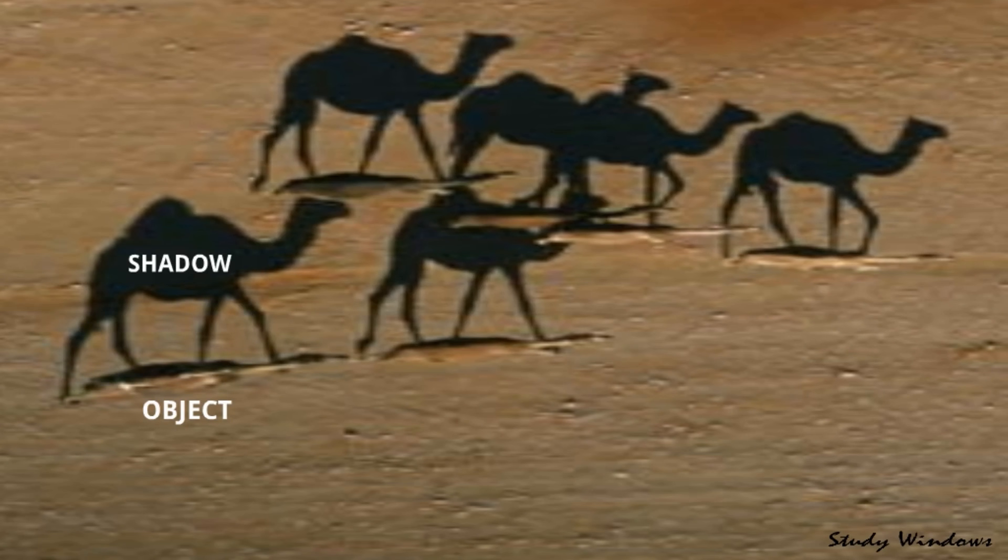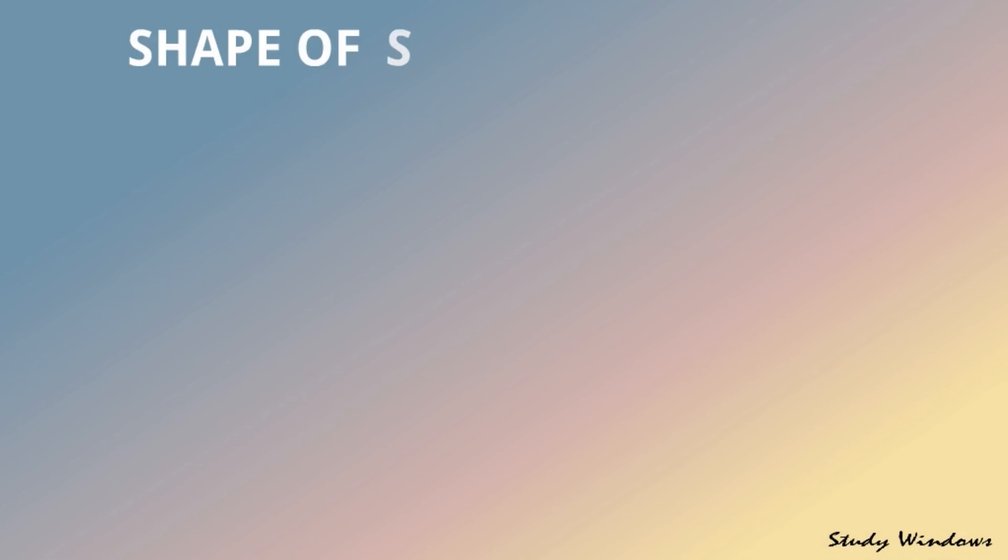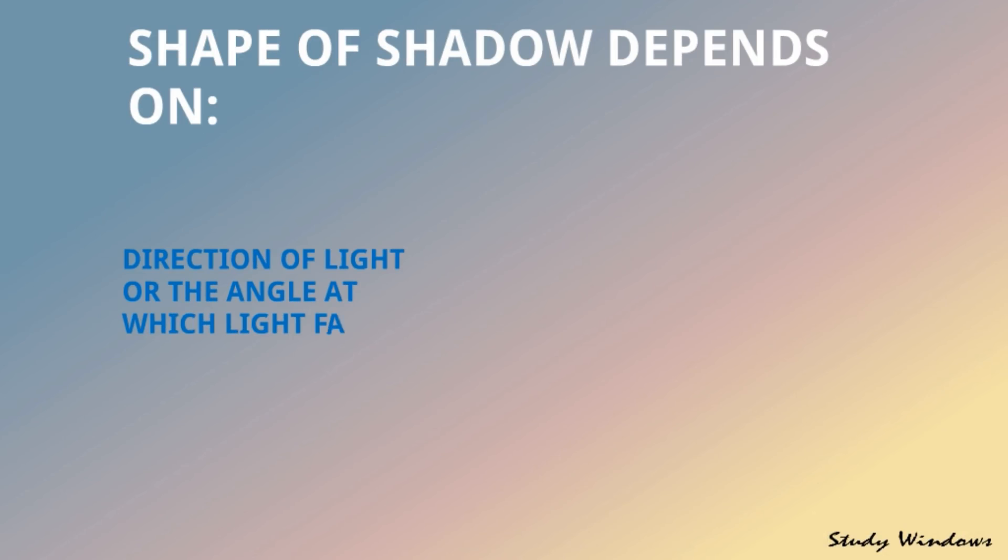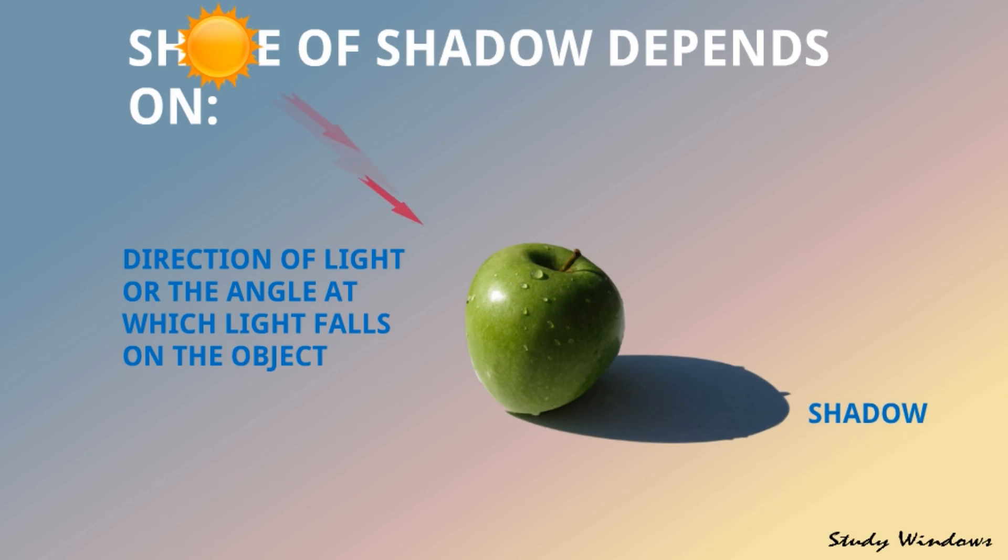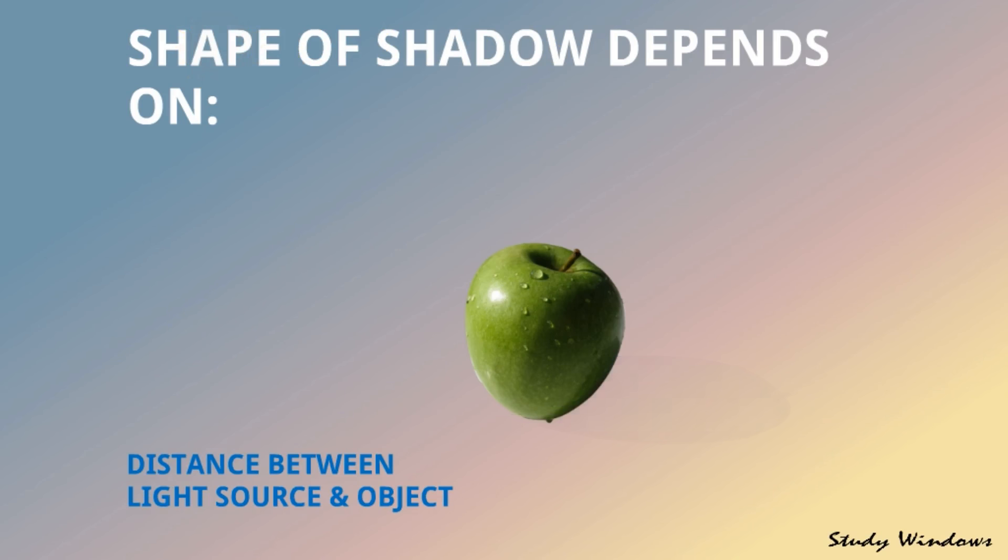Shape of shadows depends on direction of light or the angle at which light falls on the object. This is an apple, so sunlight is falling like this and shadow is here. If sun is moved and sunlight falls at a different angle, shadow will be different.